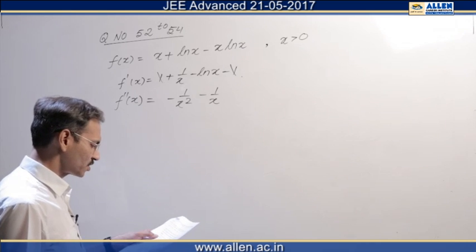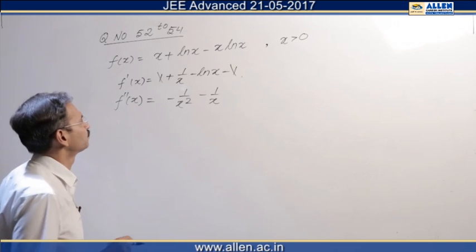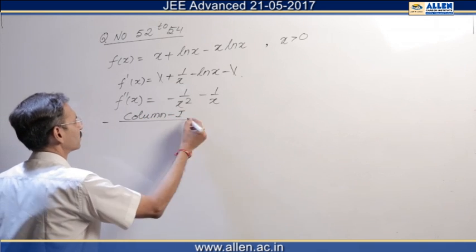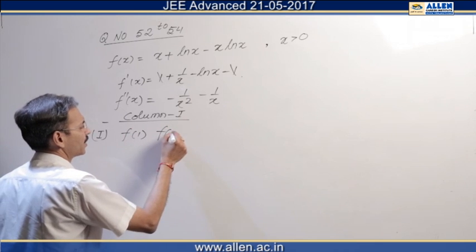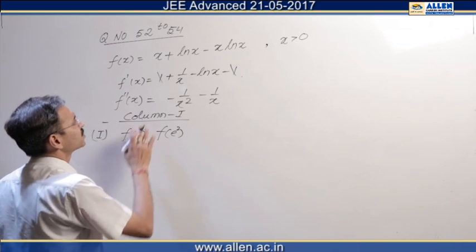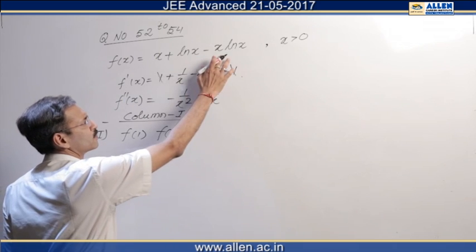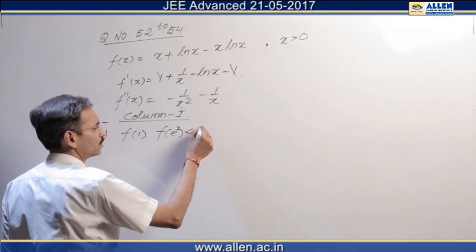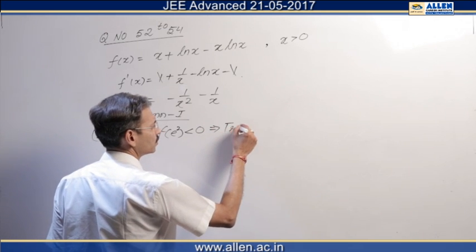Now the first statement of column 1 says f(x) is 0 for some x in 1 to e square. We will calculate f(1) and f(e square) and use the intermediate value theorem. At x equals 1, the expression is 1. At e square, it is e square minus 2e square, so overall minus e square plus 2 is negative. Therefore this is less than 0. That's why using intermediate value theorem we can say this statement is true.